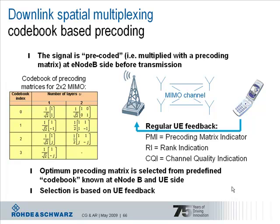Besides the PMI the UE also reports CQI feedback — channel quality indication — and also a rank indication RI, which provides information on the rank of the channel matrix. That information provides the base station with input on whether spatial multiplexing or transmit diversity should be used. So this is downlink spatial multiplexing based on codebook based precoding as the other possible MIMO mode, and the base station has different configuration options available.